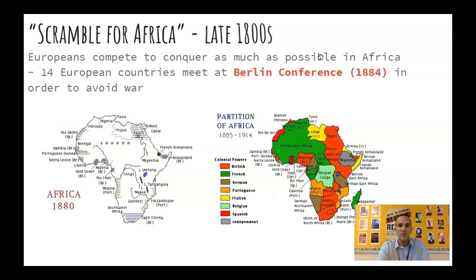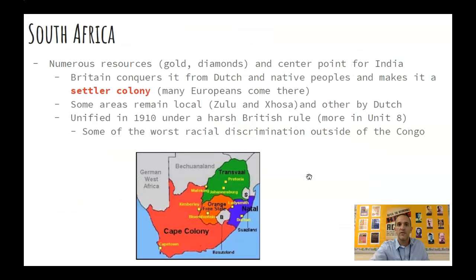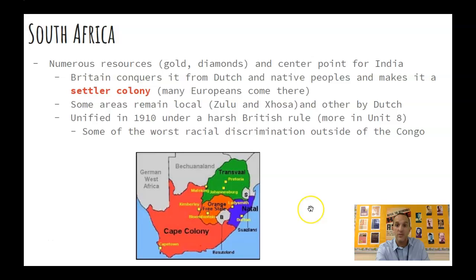Looking at the map, the big winner appears to be France, but most of their territory is the Sahara. The really big winner is Britain — the first to industrialize — who takes over a lot of land. Switching gears from the Congo to South Africa: South Africa has huge resources. The Dutch had been there since the 1600s, setting up a coastal colony because it was the midway point between their colonies in Indonesia and their trade with Japan — the Tokugawa Shogunate, where the Dutch were present.